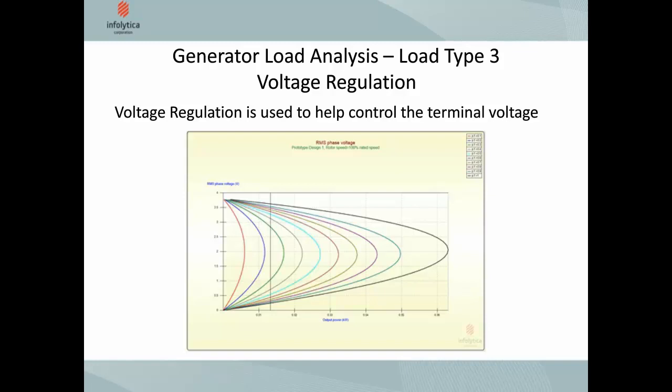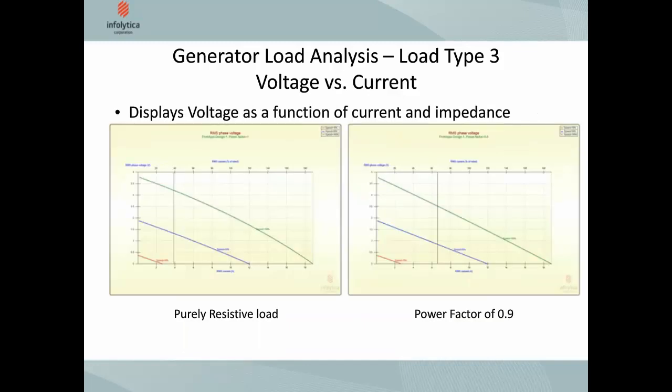The second type of analysis is voltage versus current, which displays voltage as a function of current for a given impedance — the impedance varies along the current chart. On the left side we have a purely resistive load, and on the right side a reactive load with 0.9 power factor, so you can see how those two differ.